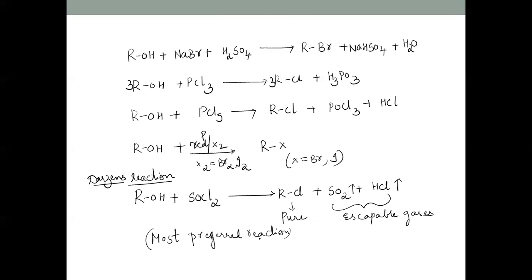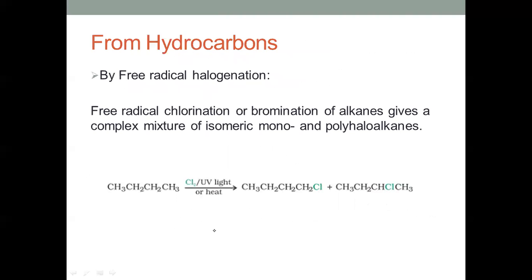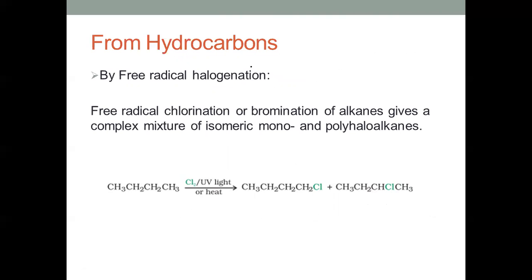This reaction using thionyl chloride is called Darzen's reaction and is the most preferred method. So these are the three methods of preparation of alkyl halides from alcohols: first using HCl (Lucas reagent), second using phosphorus halides, and third using thionyl chloride (SOCl2). The next method is from hydrocarbons — first, from alkanes.